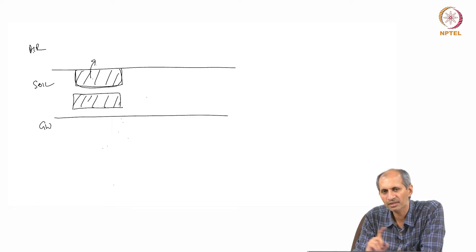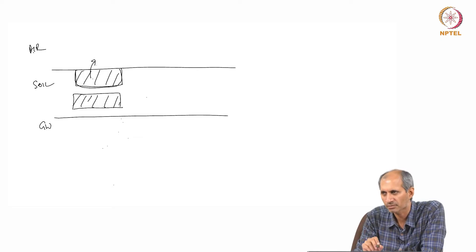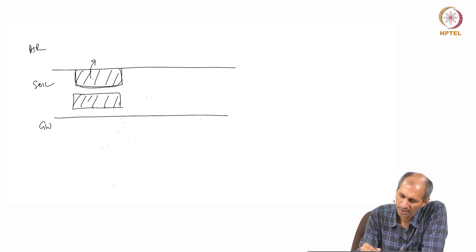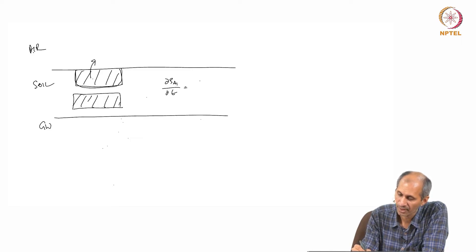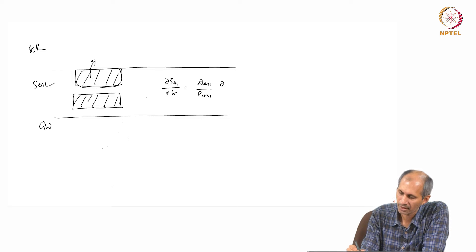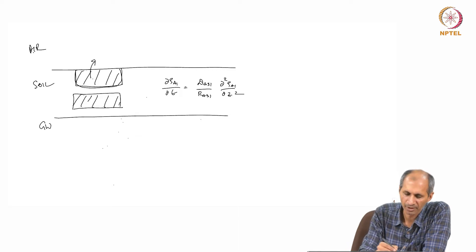Everything we have done in the sediment case applies here, the model. For example, we use the same model, this domain equation will still be rho A21 instead of rho A22, dA31 divided by RA31 into d²ρA1/dZ². Instead of sediment water interface, we are using soil air interface.